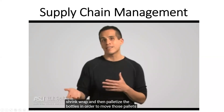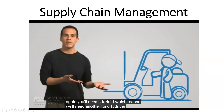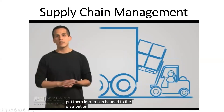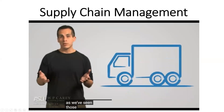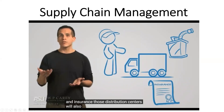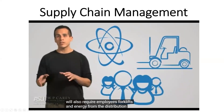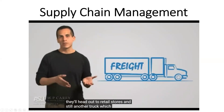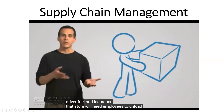In order to move those pallets, you'll need another forklift driver. That forklift will put the pallets into trucks headed to the distribution center, and those trucks will require drivers, fuel, and insurance. Distribution centers will also require employees, forklifts, and energy. From the distribution center, they'll head out to retail stores on still another truck requiring a driver, fuel, and insurance. That store will need employees to unload the truck and stock the bottles of water on the shelf or refrigerator.